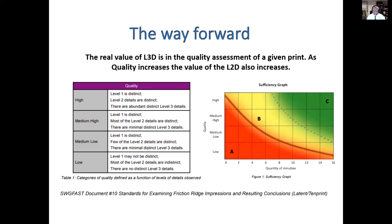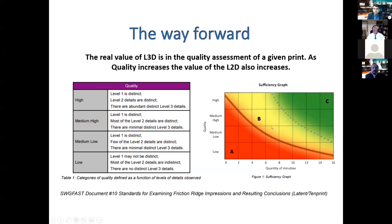Level three is not useless — it's quite valuable, and where it really shows its teeth is in a quality assessment. This is a sufficiency model put forward by SWIGFAST. In the quality metric, they have four categories and each talks about level three details: low — no level three details; medium low — minimal distinct level three details; medium high — minimal distinct level three details; and high — abundant distinct level three details. As quality increases in your latent print impression, you require fewer level two features to support an identification. That's where level three detail shows its true teeth.